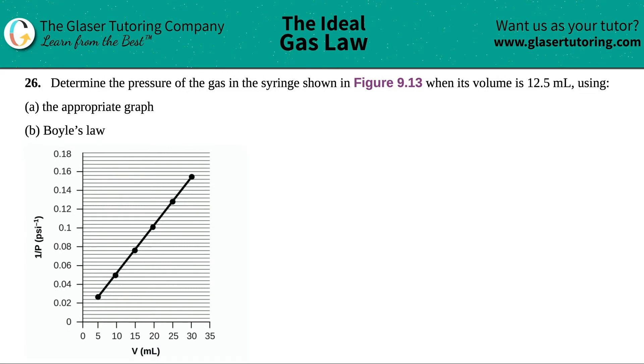Number 26. Determine the pressure of the gas in the syringe shown in Figure 9.13 when its volume is 12.5 mL using A, the appropriate graph, and then we're going to use Boyle's Law.